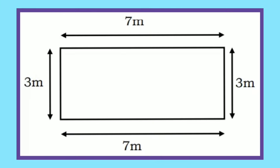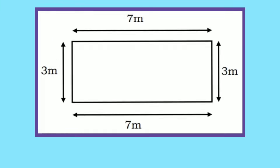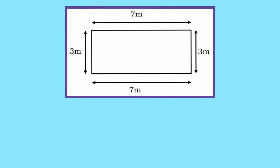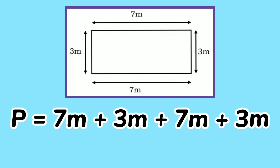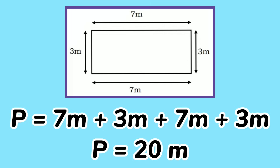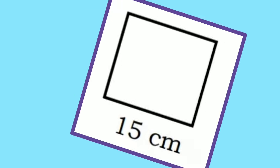Let's solve for the perimeter of this figure. P equals 7 meters plus 3 meters plus 7 meters plus 3 meters, which equals 20 meters. So the perimeter of the rectangle is 20 meters.